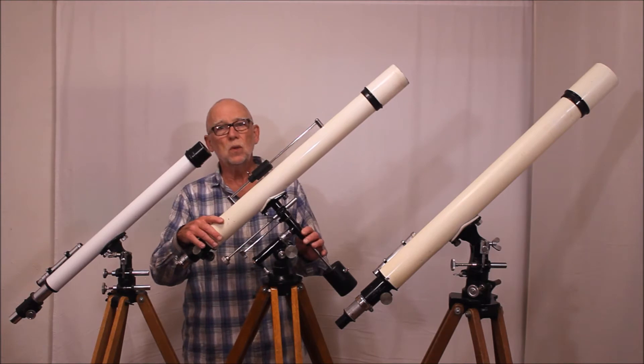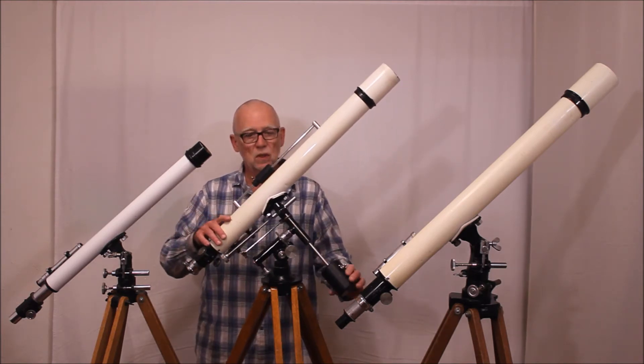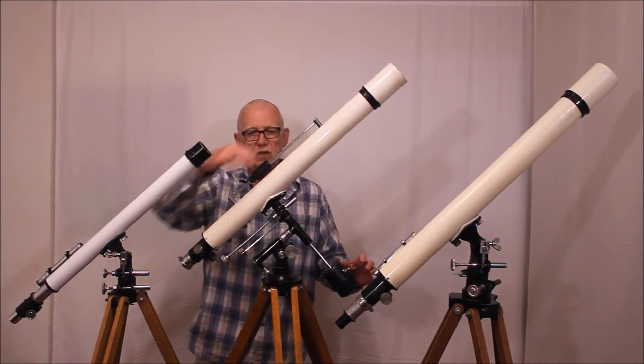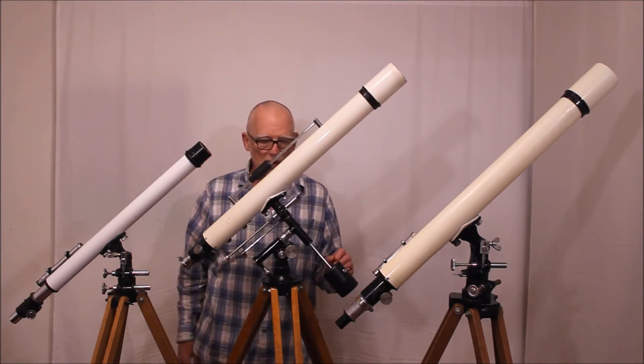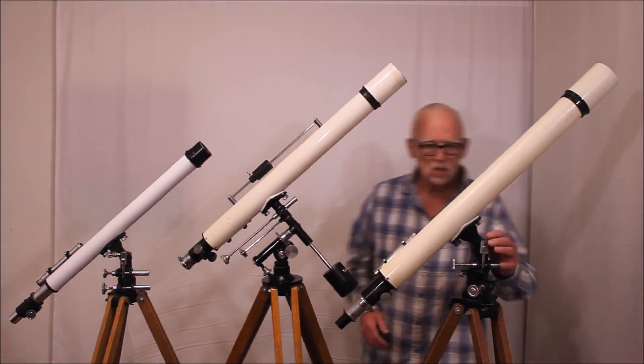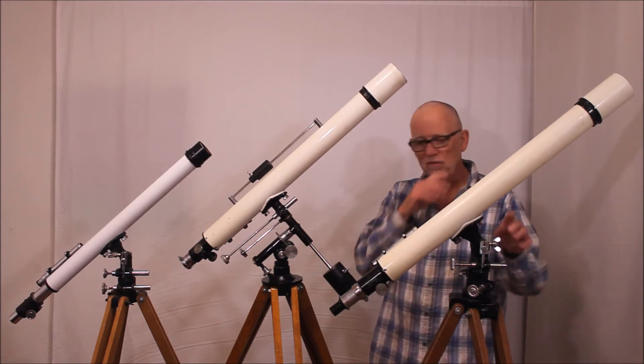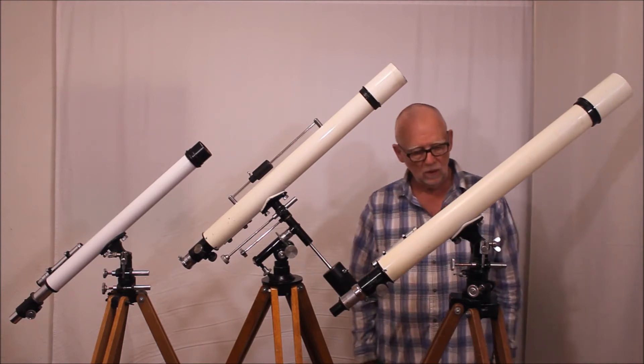This one is the 128 with a 60 millimeter, considerably more sophisticated kind of a mount, a distinctive counterweight system here on the top because of course it has the saddle arrangement. And this is the 114 that I recently restored and all of them have the saddle type style mounts.